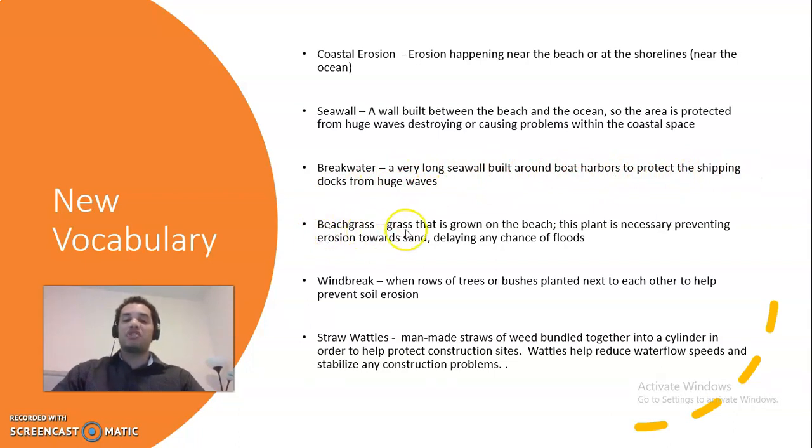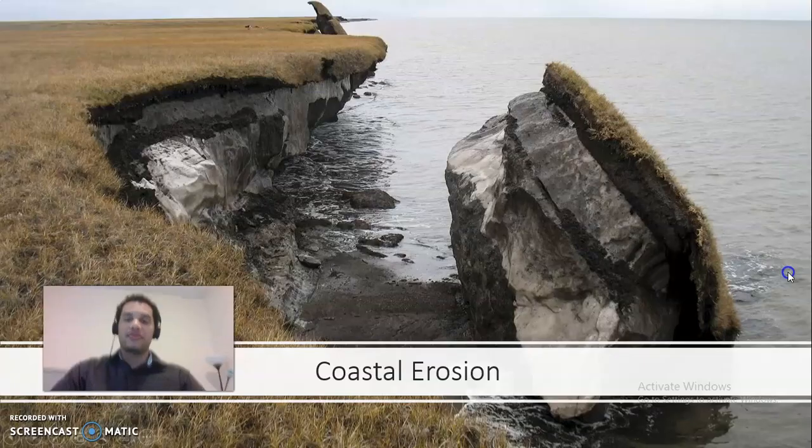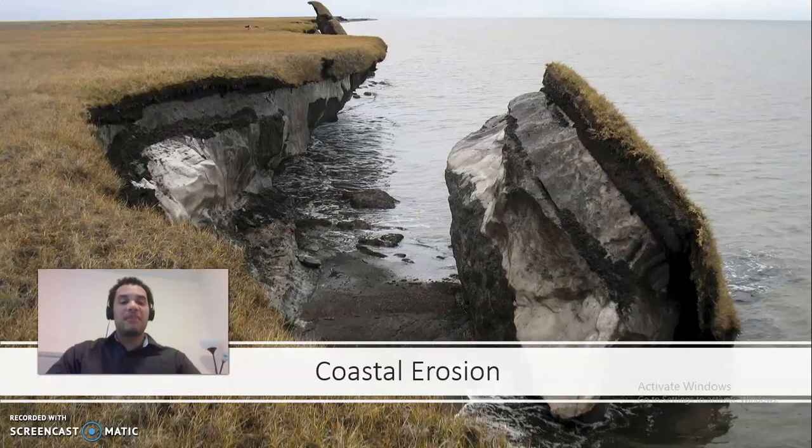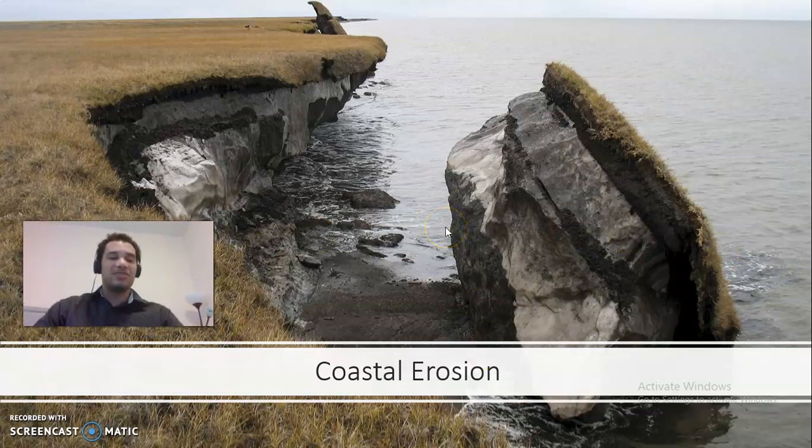Beachgrass. Beachgrass is grass that is grown on the beach. This plant is necessary preventing erosion towards sand, delaying any chance of floods. Windbreak. Windbreak is when rows of trees or bushes planted next to each other to help prevent soil erosion. Straw wattles. Straw wattles are man-made straws of weed bundled together into a cylinder in order to help protect construction sites. Wattles help reduce water flow speeds and stabilize any construction problems. All right. So I'm going to show you pictures that makes it easier for you to understand what those vocabulary words were. I know those words were too big.